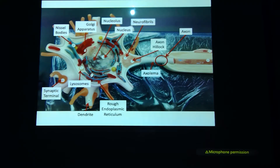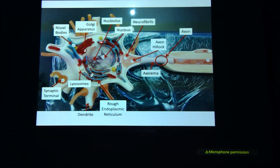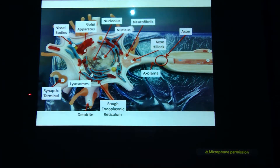Opening up that cell body, you can see the nucleus, and the nucleolus in kind of a dark deep maroon — there are multiple. You can see the Golgi in red. You've got the Nissl bodies in the lighter blue color. Lysosomes are going to be these yellow bubbles that you see, and neurofibrils — you can see the lines here.